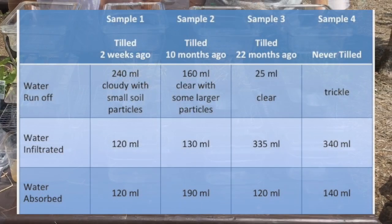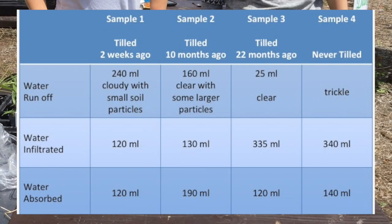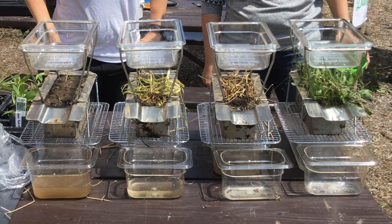This chart shows the volume of water collected from each sample through each pathway. The second sample absorbed more water than the other three, likely because the tarp covering kept that soil a bit drier. While the amount of runoff from the first sample is certainly notable, it is also notable how similar the third and fourth samples are. These results seem to indicate that if we can avoid tillage for even two years, we can dramatically improve water infiltration and reduce erosion.